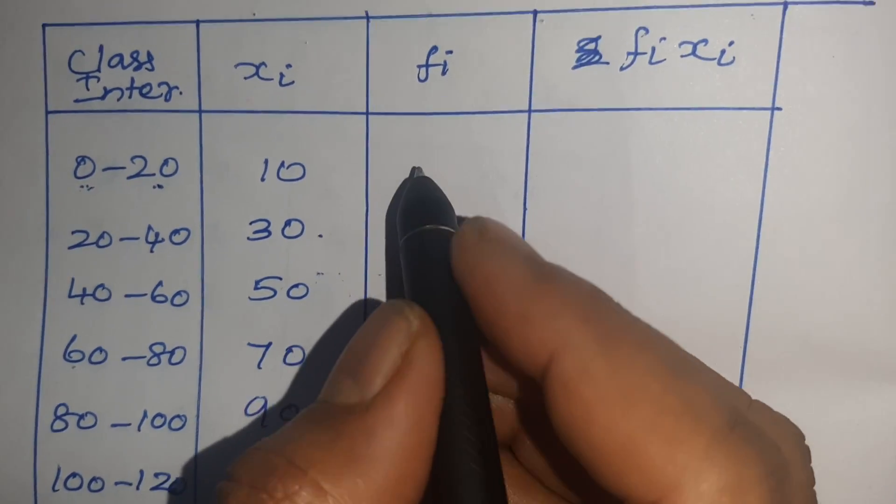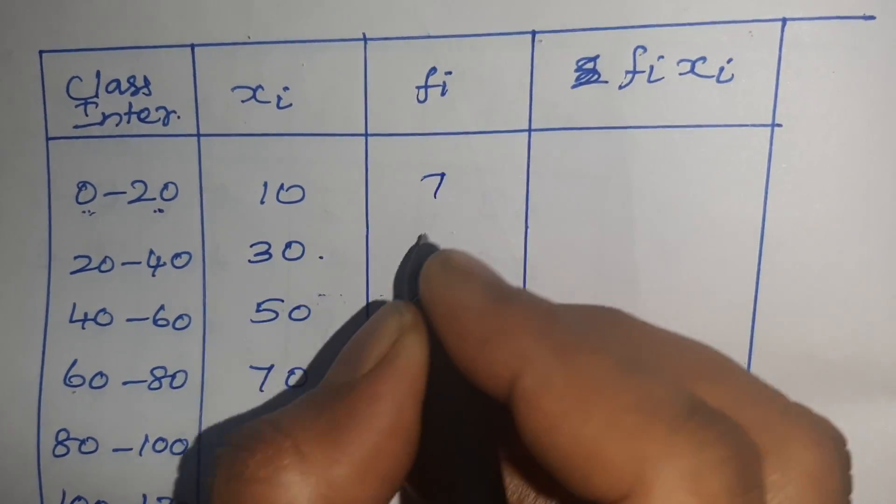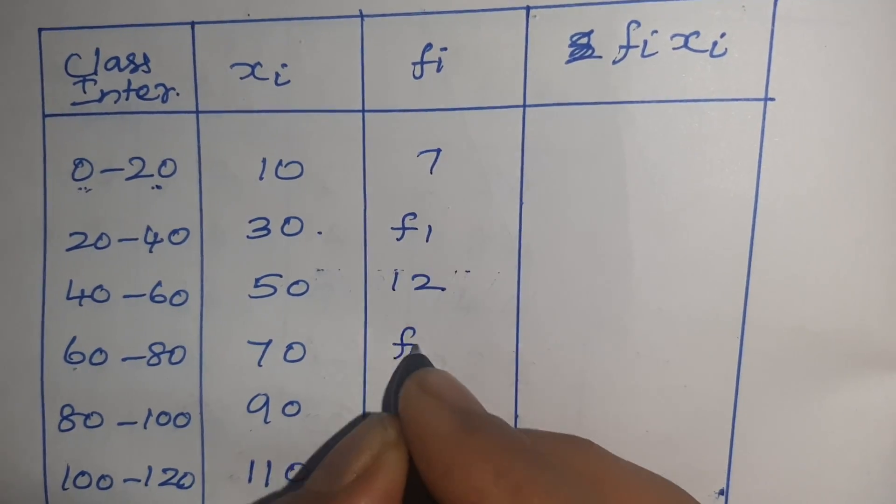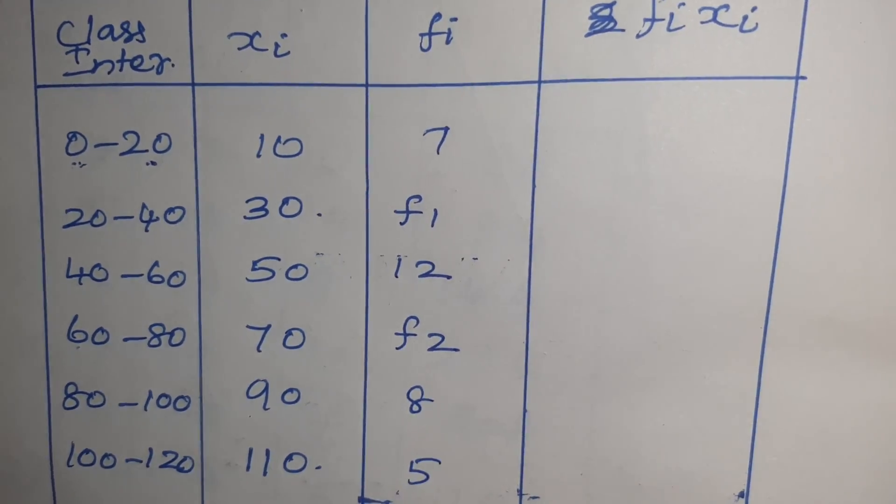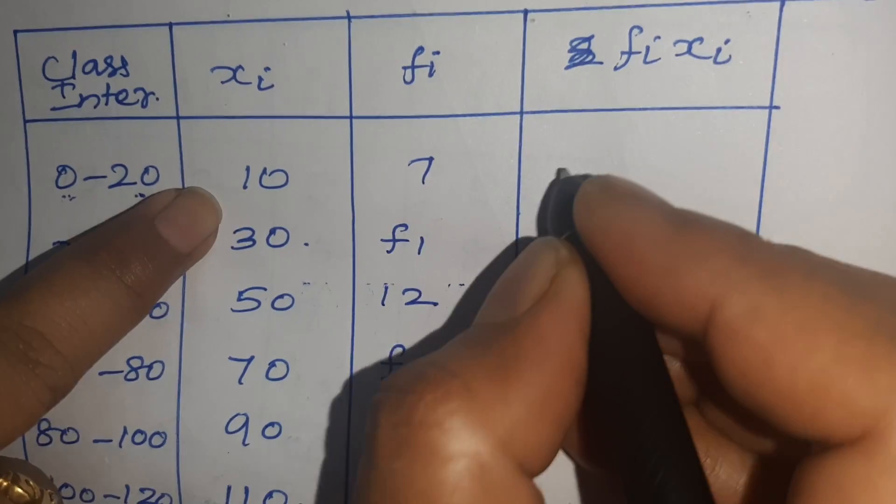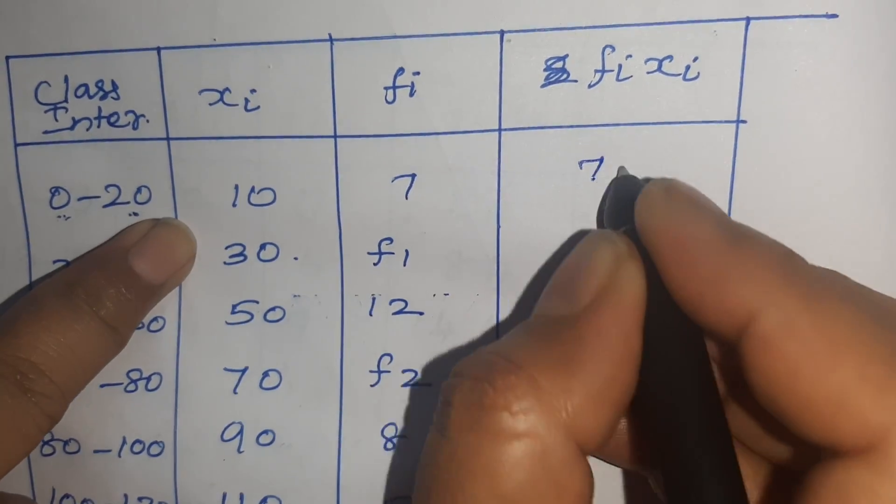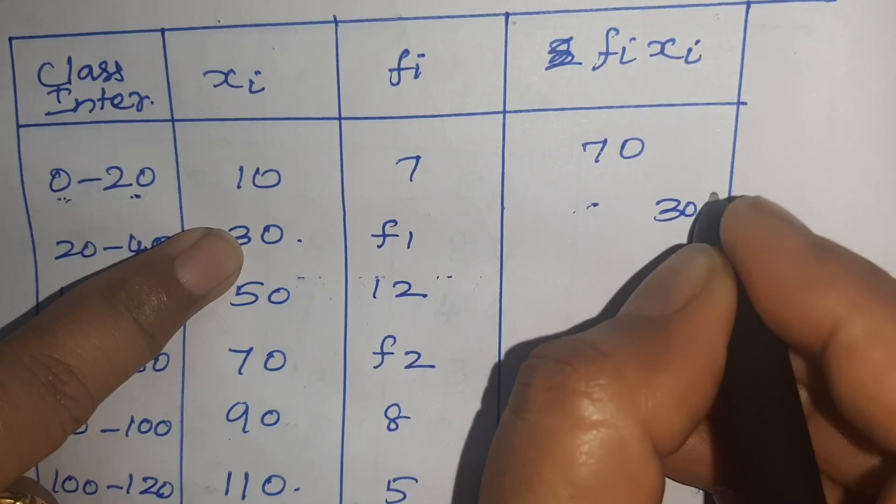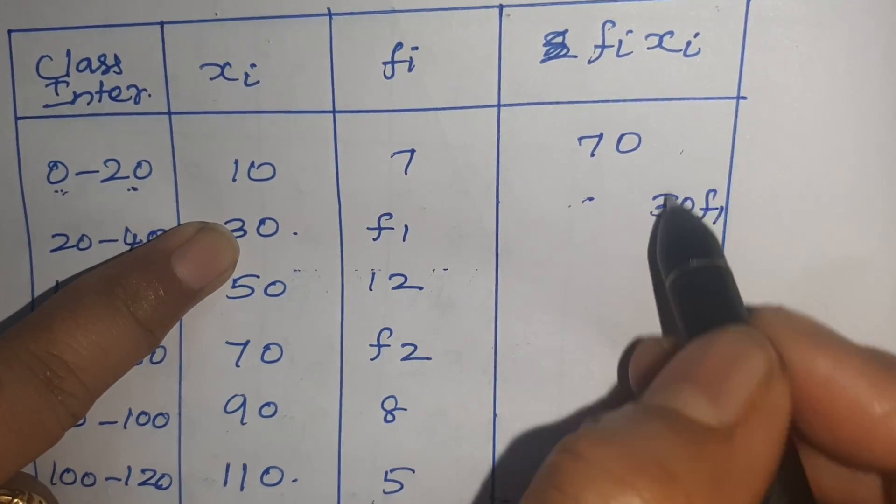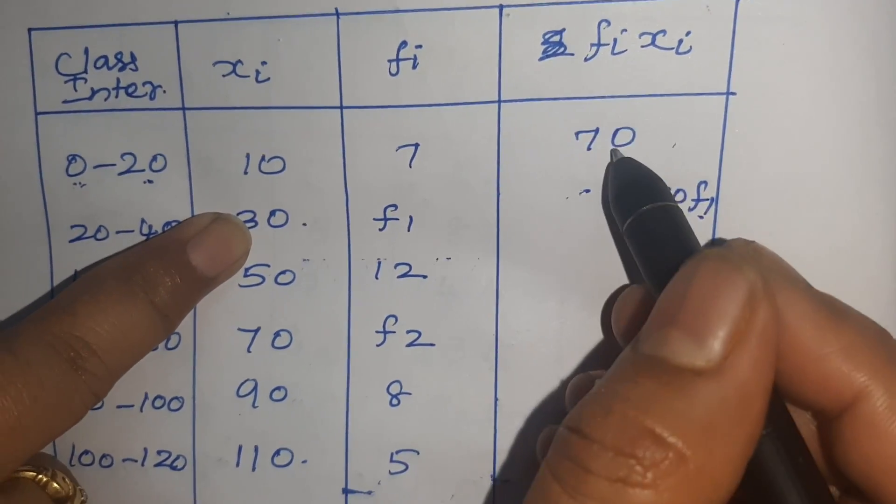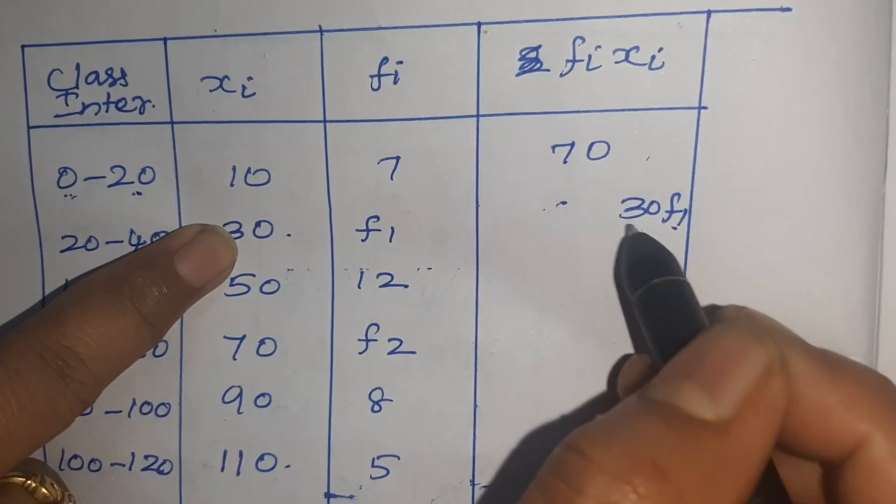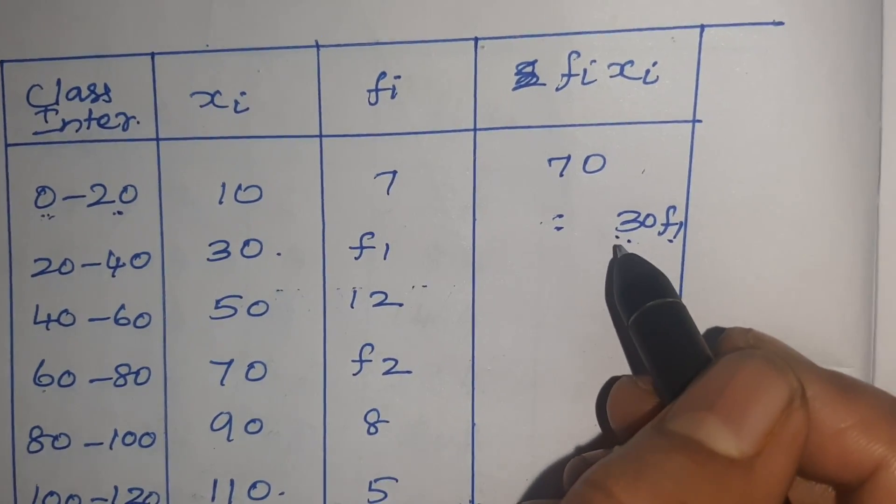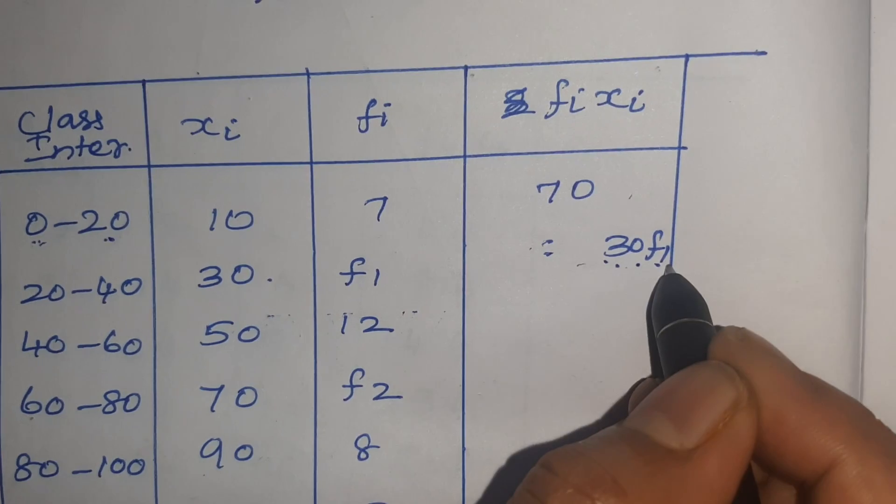Fi is given as 7, F1, 12, F2, 8, 5. Then Fi Xi: 10 into 7 equals 70. 30 into F1 equals 30F1. Here I write it here because while we are adding it is easy to add. If it is in between, sometimes we make a mistake. So I write it here.